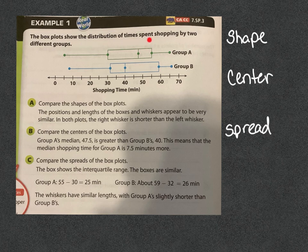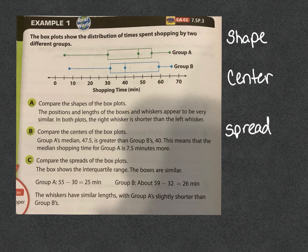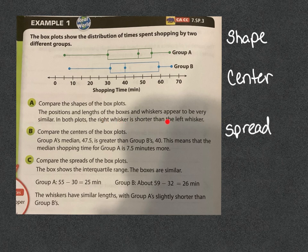This box plot shows the distribution of time spent shopping by two different groups. In group A, the least amount of shopping was done by this person here and the most by this person here. In group B, the least amount of shopping is fairly close, and the most is done by this person here. Looking at the shapes: the lengths of the boxes look pretty similar, and in both plots the right whisker is shorter than the left whisker.